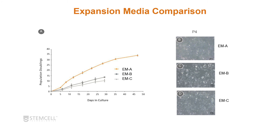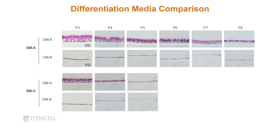Media A appears to keep cells doubling for longer than media B or C. Looking at histology sections comparing expansion media A and C with differentiation media A and B across passages P3 to P8, you can see differences as cells progress through passages. For example, with differentiation media A at P3 you see a nice tall epithelium with cilia, but by passage six or seven you see a loss of cilia and the epithelium becomes progressively shorter. These primary epithelial cells can't go on indefinitely, so you want to keep them within a good passage range.